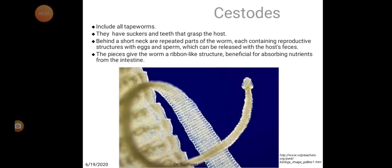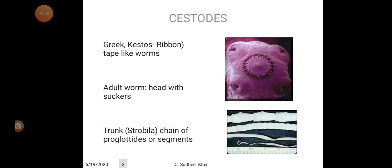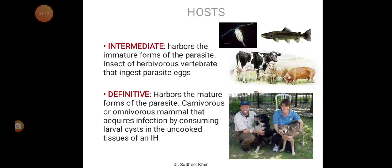These pieces give the worm a ribbon-like structure, beneficial for absorbing nutrients from the intestine. The adult worm has a head called scolex, a trunk called strobila, and a chain of proglotids or segments. There are two hosts: the intermediate host, which harbors immature forms of the parasite — insects or herbivore vertebrates that ingest parasite eggs — and the definitive host, which harbors mature forms, typically carnivores or omnivores that acquire infection by consuming larval cysts in uncooked tissue of an intermediate host.